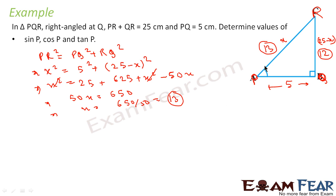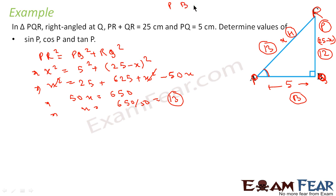Now it is very simple. Since we are talking about angle P, PR is the hypotenuse. PQ is the base (adjacent side) and QR is the perpendicular (opposite side). Using the mnemonic Pandit Badri Parashad, Hari Hari Bol — sin is P/H, cos is B/H, tan is P/B.